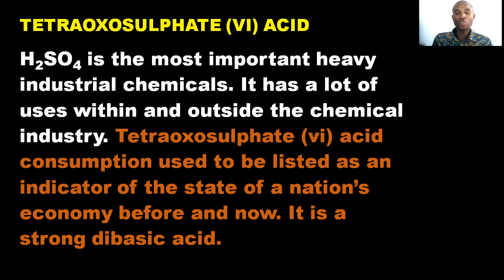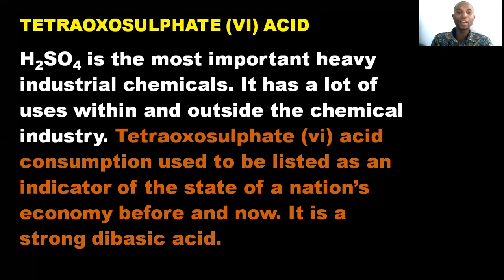You should be able to state the properties of tetraoxosulphate-VI acid, which is H₂SO₄. Next, you should be able to outline the uses of tetraoxosulphate-VI acid. H₂SO₄ is one of the most important heavy industrial chemicals. We talked about chemical industries where we discussed heavy chemicals and fine chemicals, and one of the heavy chemicals mentioned is tetraoxosulphate-VI acid, H₂SO₄. We still have others like HCl and sodium hydroxide.